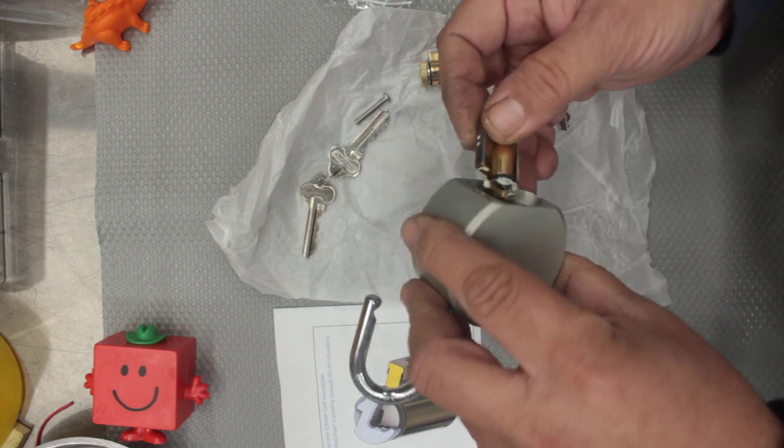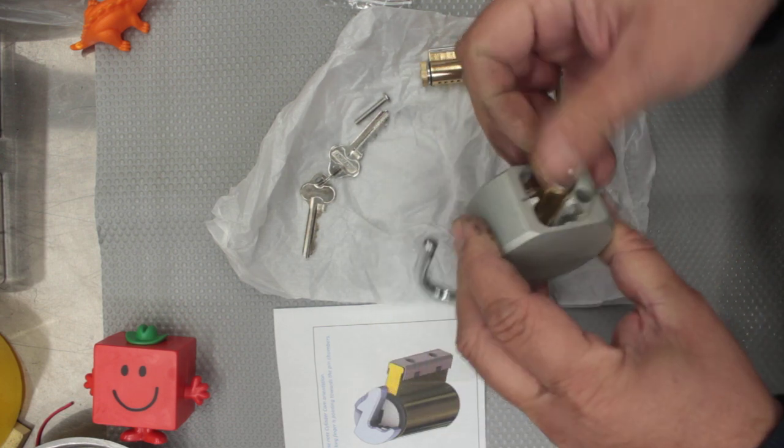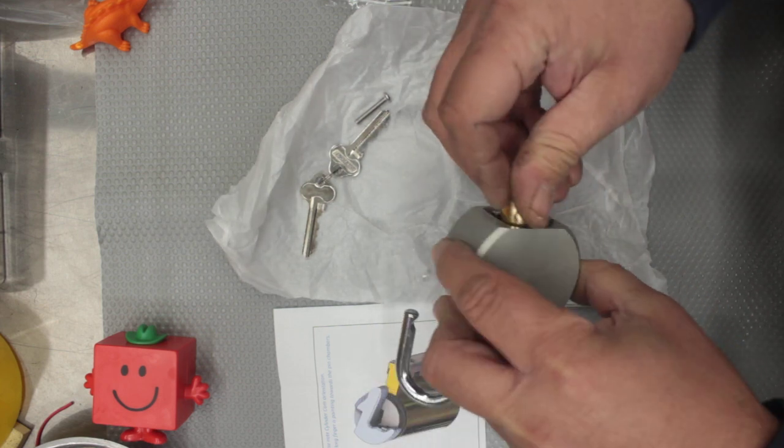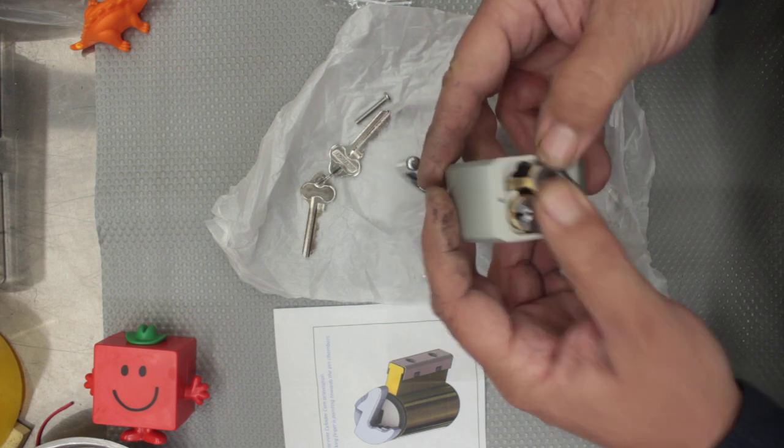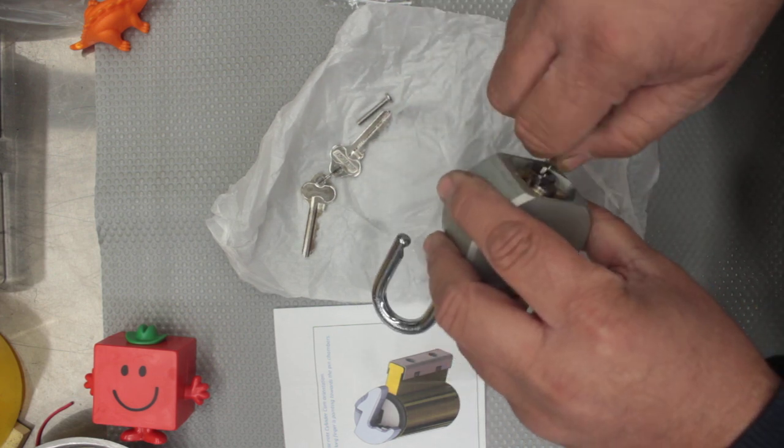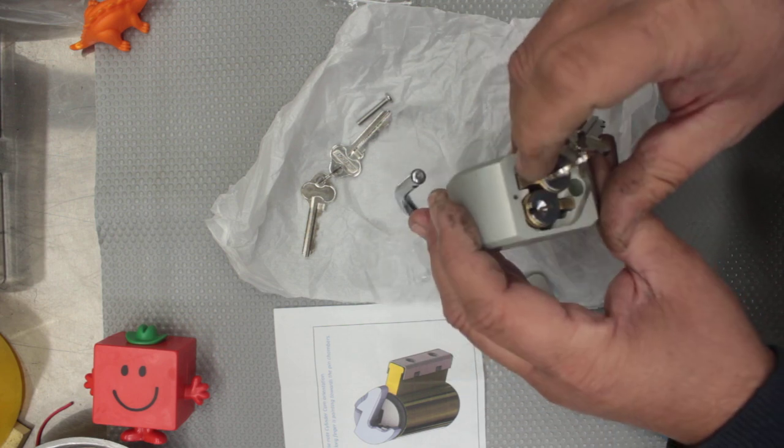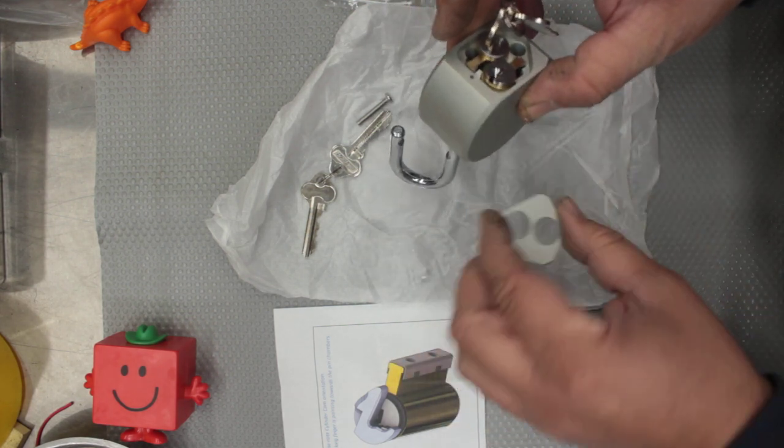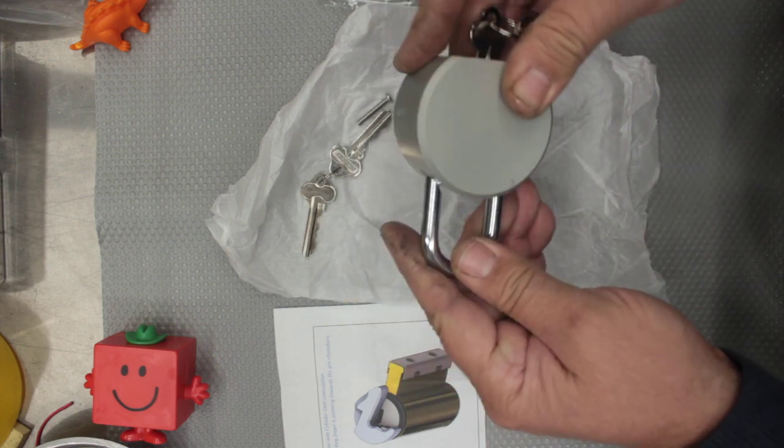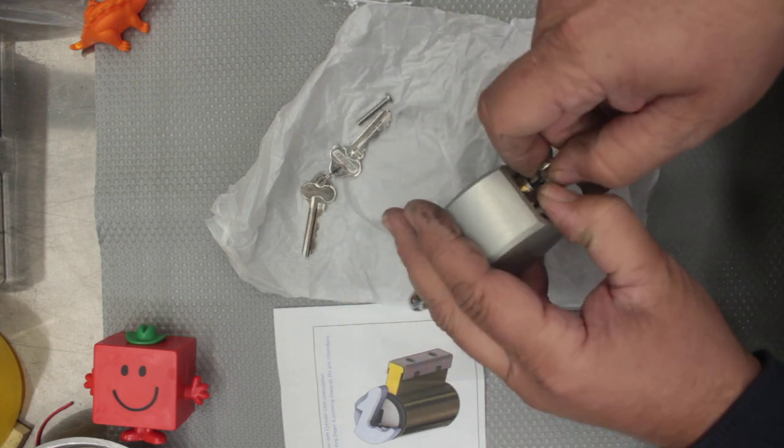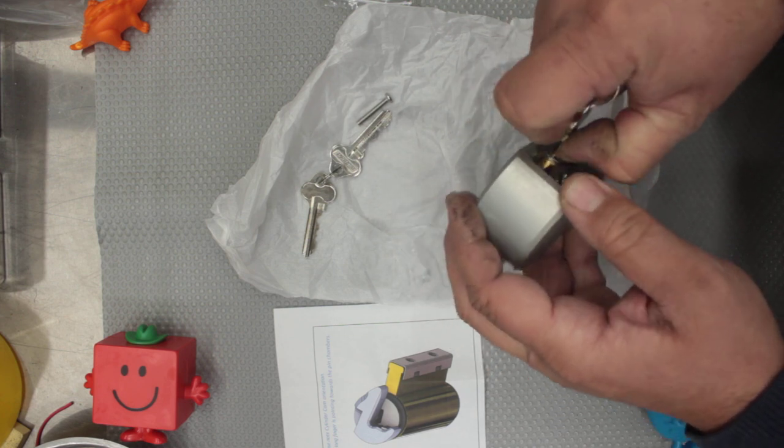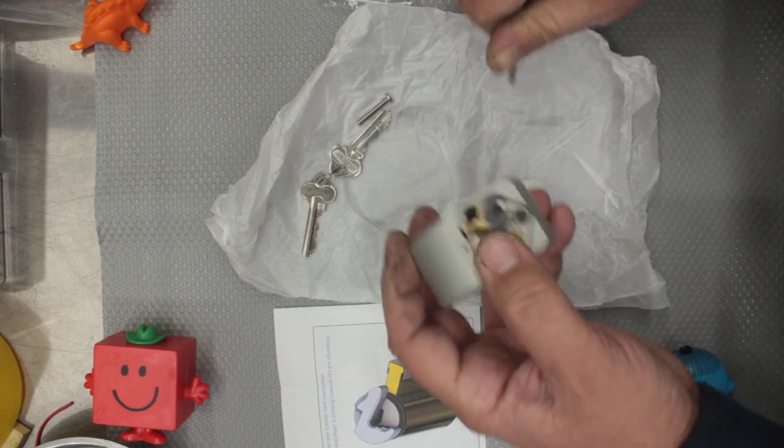I'm gonna pop that back in there, and I'm gonna pop this one in there too. So one goes one way, one goes the other way. Okay, that looks pretty good. The only problem is, how do I put my screw in to hold that on?